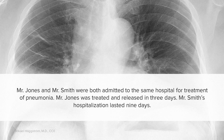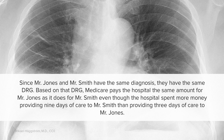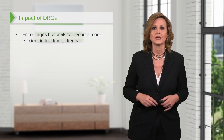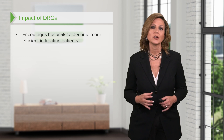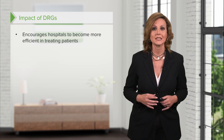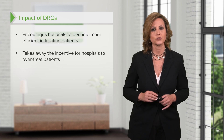Let's consider this example. Mr. Jones and Mr. Smith were both admitted to the same hospital for treatment of pneumonia. Mr. Jones was treated and released in three days. Mr. Smith's hospitalization lasted nine days. Since Mr. Jones and Mr. Smith had the exact same diagnosis, they have the same DRG. Based on that DRG, Medicare pays the hospital the same amount for Mr. Jones as it does for Mr. Smith, even though the hospital spent more money providing nine days of care to Mr. Smith than providing three days of care to Mr. Jones. The DRG system of payment encourages hospitals to become more efficient in treating patients and takes away the incentive for hospitals to over-treat patients.